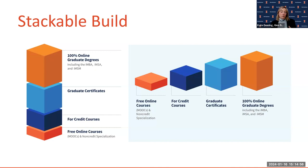If you later decide you want to stack further — say you complete an accounting foundations graduate certificate, realize you love accounting, and decide you could excel in an IMSA degree — you can take those 12 credit hours from the graduate certificate and stack them into your master's degree with 12 credit hours already done. There's no required order; you can enter at any point. All have separate application processes that are not hard — pretty simple and straightforward.